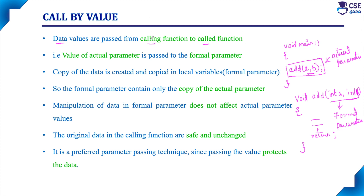The data parameters will be passed from calling function to the called function. This is nothing but called by value. Here, directly we are passing a value — sending the values from calling function to the called function. Internally, the actual parameter sends value to the formal parameter. The value of actual parameter — that is, the value of A and the value of B — will be sent to the formal parameters. This value of A will be sent to formal parameter A and this value of B will be sent to formal parameter B.